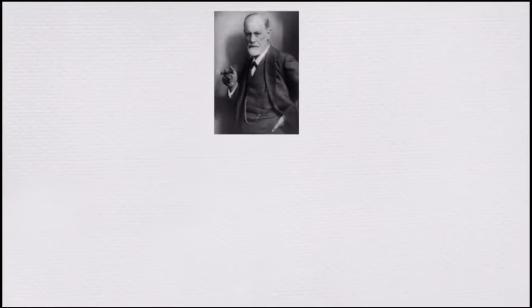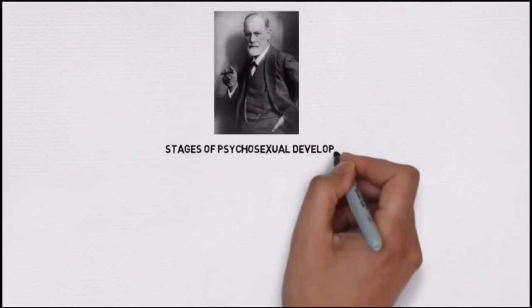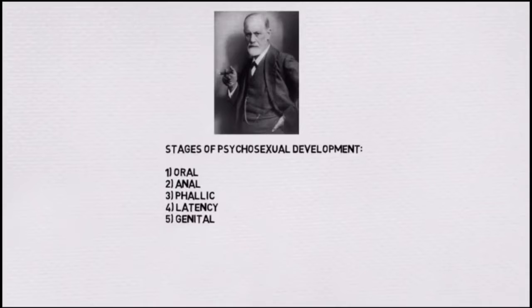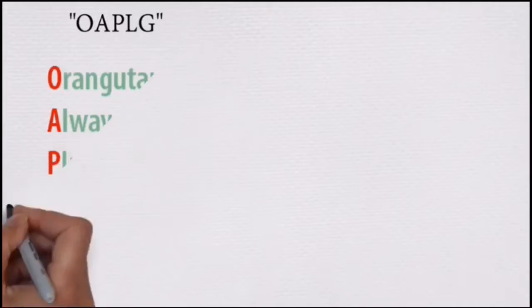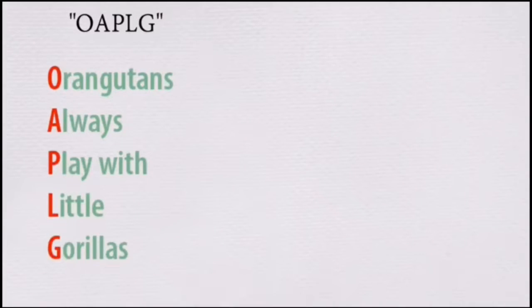You can quickly memorize Freud's stages of sexual development by creating an acronym. Take the first letter of each stage, O-A-P-L-N-G, OAPLAGUE, which is not really a great acronym. You could create a sentence in which the first letter of the words starts with the first letter of each stage.